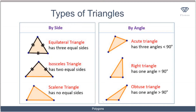We can classify triangles either by the properties of their sides or by their angles. Classifying by sides: a triangle in which all three sides are equal is an equilateral triangle — all sides equal, so all angles are also equal. An isosceles triangle has only two equal sides, so the two base angles are equal. A scalene triangle has no equal sides and no equal angles.